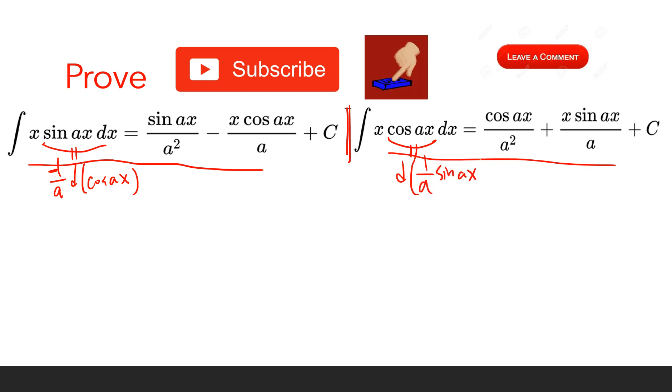We use integration by parts. The formula is ∫u dv = uv - ∫v du. For the first integral, we set u = x and dv = sin ax dx.